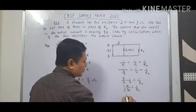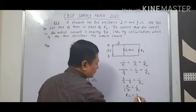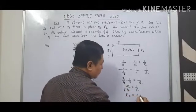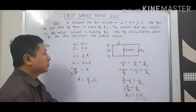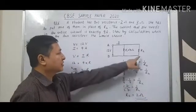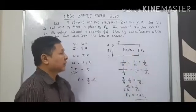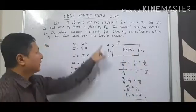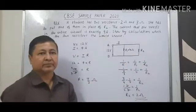So R2 equals 2 ohm. That means she should choose the 2 ohm resistance in the place of R2 to get the current exactly 9 ampere.